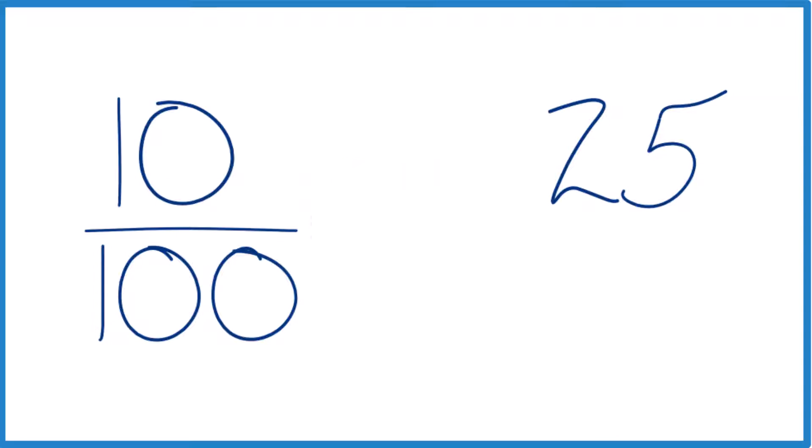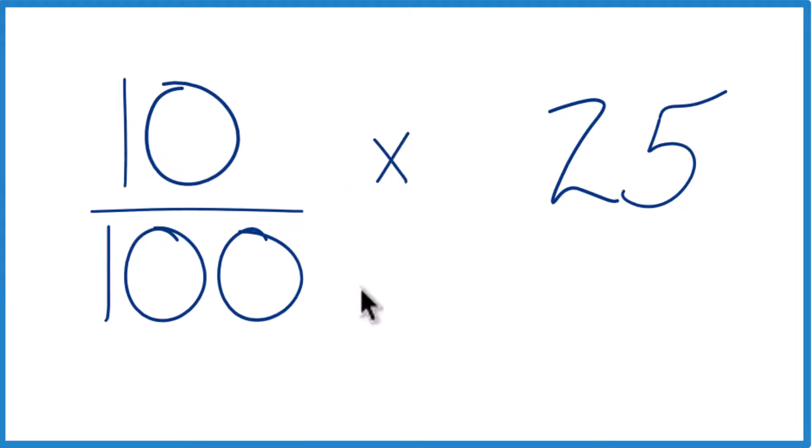And of, we're going to change that to multiplication. So really what we're doing is multiplying 10 over 100 times 25.